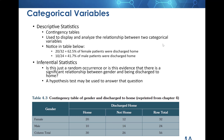So in this table, we have 20 out of 32 — 62.5% of female patients are discharged home. Then we have 10 out of 24 — 41.7% of male patients are discharged home.